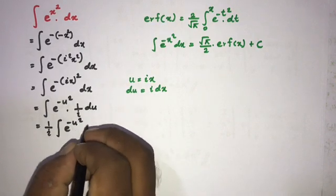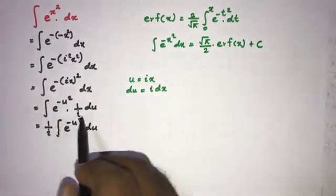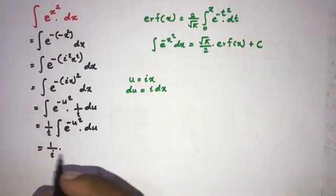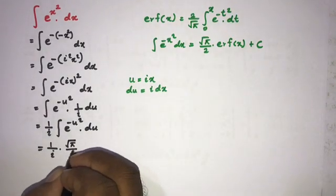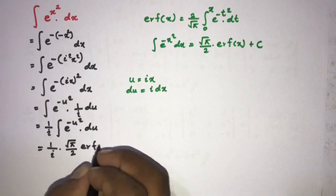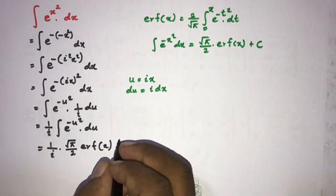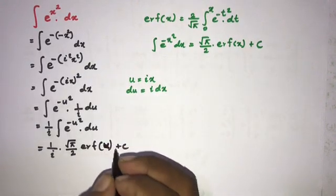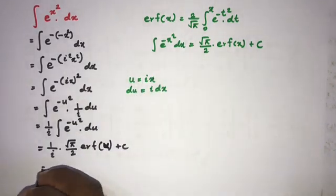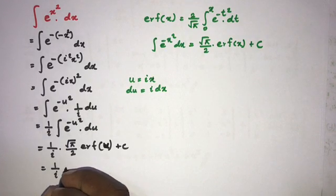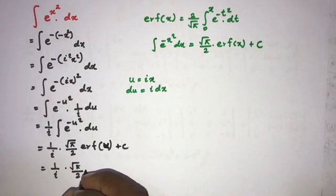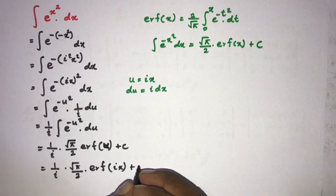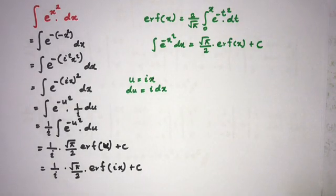Plugging in, we get 1 over i times the integral of e to the minus u squared du. We know this integral equals square root of pi over 2 times erf(u) plus c. Since 1 over i is a constant outside the integral, the result is 1 over i times square root of pi over 2 times erf(u), and substituting back u equals ix gives erf(ix) plus c.